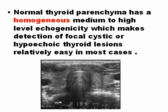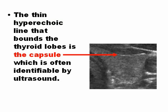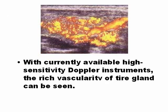Normally, the parenchyma in ultrasound is homogeneous, like the liver, the spleen, and other organs. This makes it very easy to find cysts or hypoechoic masses in the thyroid. There is a hypoechoic capsule around the thyroid that is relatively easy to find. With Doppler, you can see that the thyroid is a highly vascular organ, like other glands — glands in general have high vascularity, producing a lot of color on color Doppler.